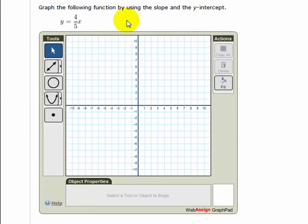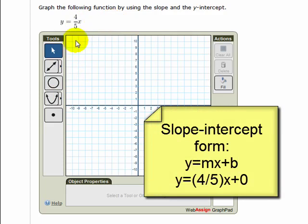In this help session, we look at a variety of ways to graph lines using the graph pad. One of the ways you may choose to graph lines is using the slope-intercept form. In this case, we know the slope is 4 fifths and the y-intercept is 0.